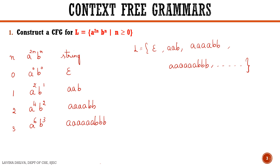So we can see that there is a pattern. First, the a's occur in pairs, and for every pair of a's which are occurring, a corresponding b is generated.